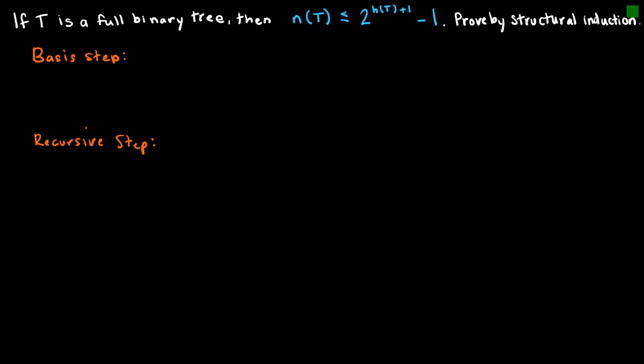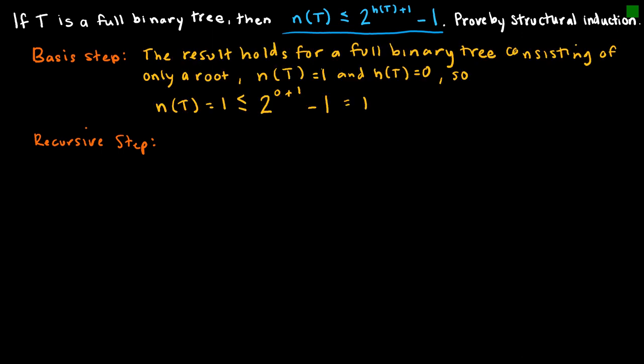I want to look at one structural induction proof involving full binary trees. It basically says: if T is a full binary tree, then the inequality N(T) ≤ 2^(H(T)+1) − 1 holds. To prove this by structural induction, the basis step shows it's true for the smallest rooted tree — a single vertex with no edges — where N(T) = 1 and H(T) = 0, giving 1 ≤ 2^(0+1) − 1 = 1. The basis step holds.